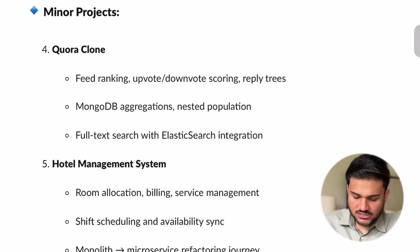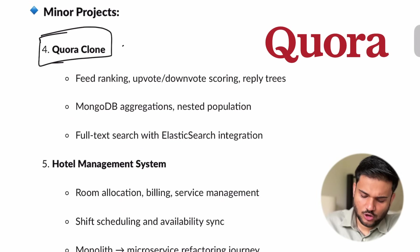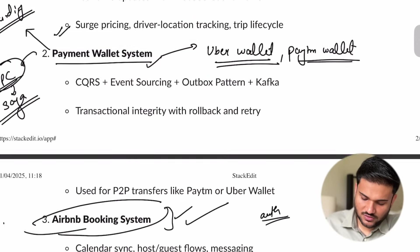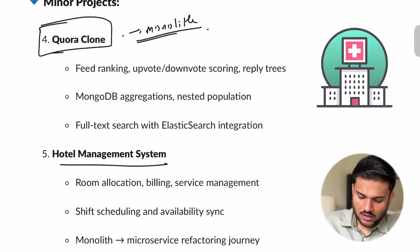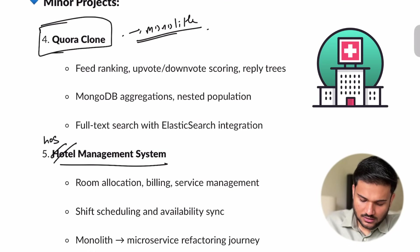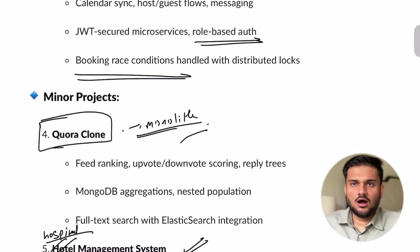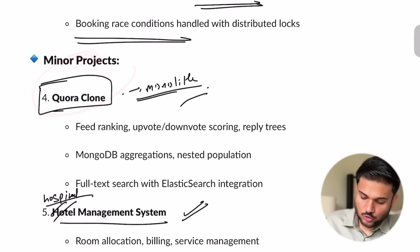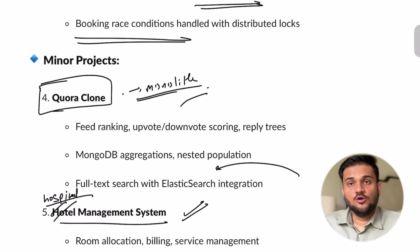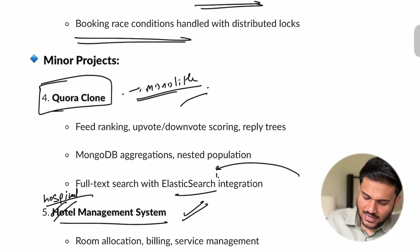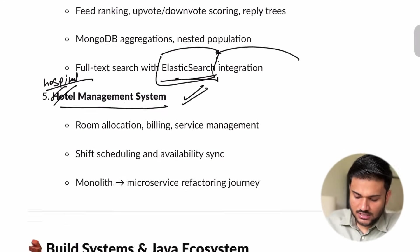There are a couple of minor projects — one is going to be kind of like a social media platform, more like a monolith for Quora or Twitter. All of the other projects — the Uber backend, payment wallet, and Airbnb — are going to be dedicated microservice-based projects. The Quora one and the hospital management system are going to be more like monoliths, slightly more on the basic side. An interesting aspect of the Quora project is going to be the Elasticsearch integration — how you can integrate Elasticsearch so that people can do full-text search, how Elasticsearch works, and what are inverted indexes.